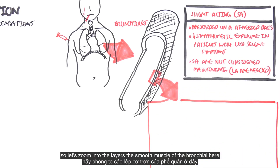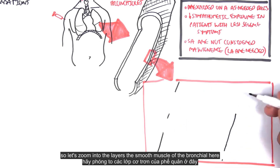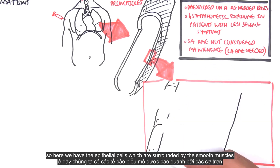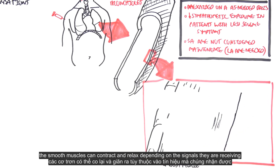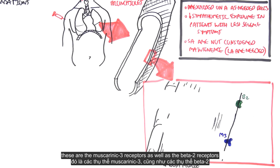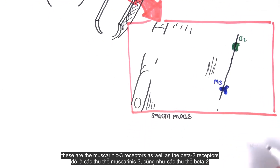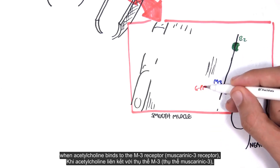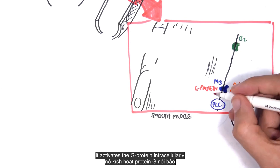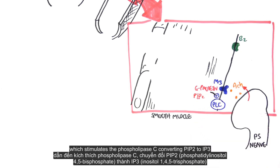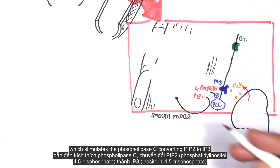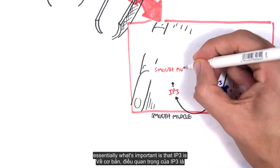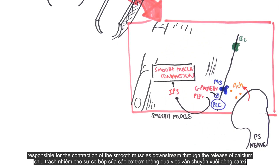The smooth muscles surrounding the epithelial cells of the bronchioles can contract and relax depending on the signals they receive. The smooth muscles have muscarinic 3 receptors as well as beta-2 receptors on their cell surface. The parasympathetic nerve supplies the smooth muscle of the airways and releases acetylcholine. When acetylcholine binds to the M3 receptor, it activates the G protein intracellularly, which stimulates phospholipase C converting PIP2 to IP3, which is responsible for the contraction of smooth muscles downstream through the release of calcium.